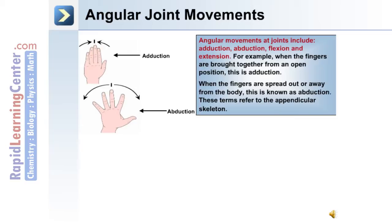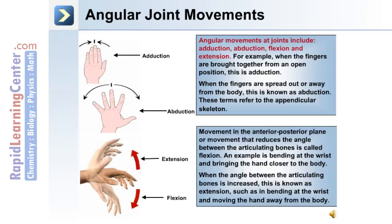These terms refer to the appendicular skeleton. Movement in the anterior-posterior plane, or movement that reduces the angle between the articulating bones, is called flexion. An example is bending at the wrist and bringing the hand closer to the body. When the angle between the articulating bones is increased, this is known as extension, such as bending at the wrist and moving the hand away from the body.